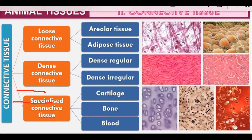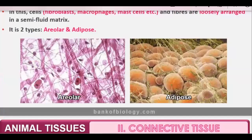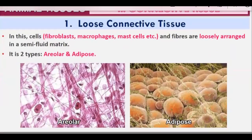Connective tissue is of three types: loose connective tissue, dense connective tissue, and specialized connective tissue. Loose connective tissue has two types: areolar and adipose tissue. Dense connective tissue has dense regular and dense irregular types. Specialized connective tissue includes blood, bone, and cartilage — which join one part of the body to another.